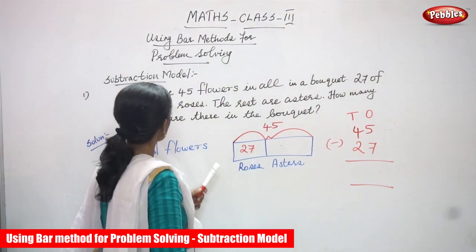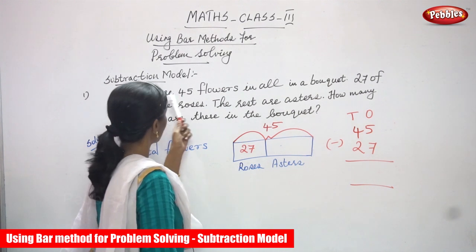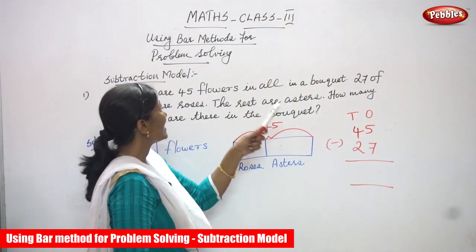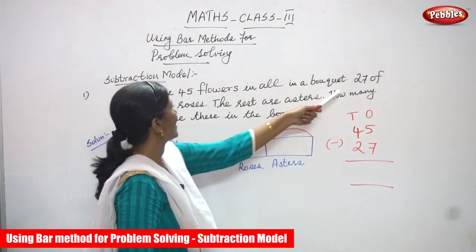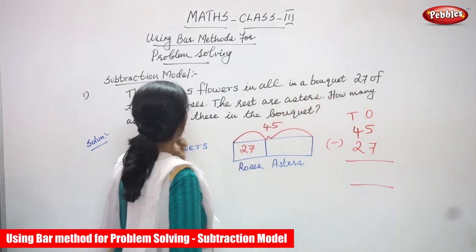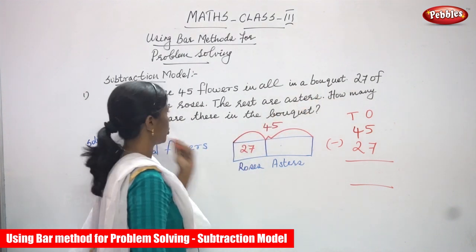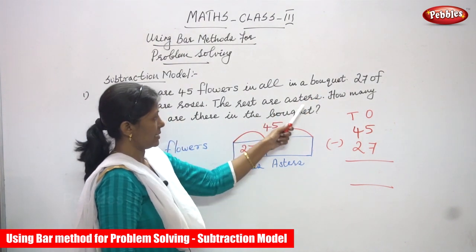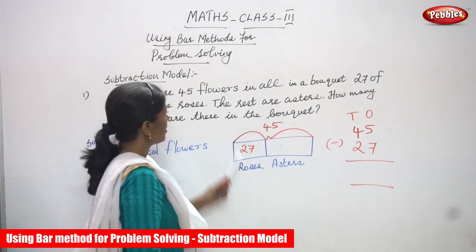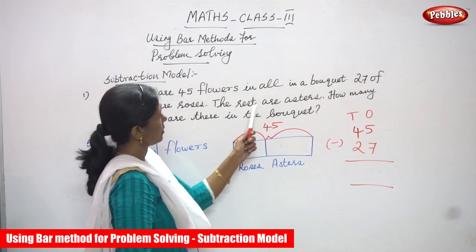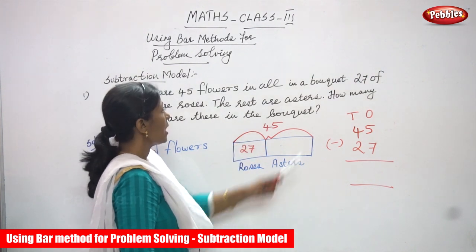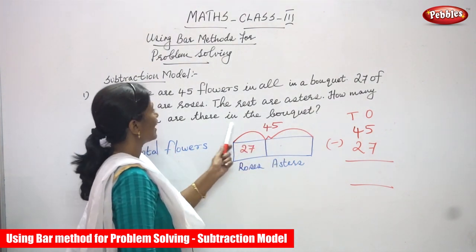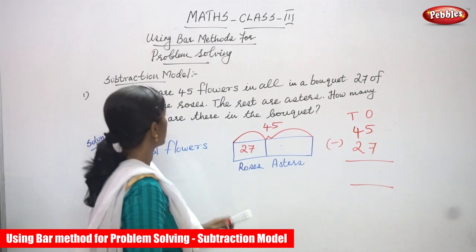I'll repeat the question once again. There are 45 flowers in all in a bouquet. 27 of these are roses. The rest are asters. How many asters are there in the bouquet?